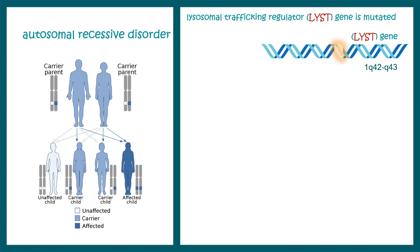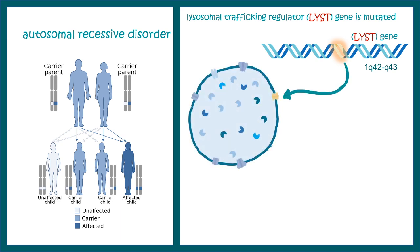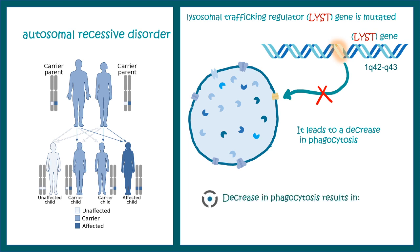This lysosomal trafficking gene is situated in the 1q42-q43 region and gives rise to a specific regulator protein that helps take specific substances inside the lysosome. When this gene is mutated, this product is not made and overall lysosomal trafficking is disrupted, leading to decreased phagocytosis, which can lead to albinism, peripheral neuropathy, and recurrent pyogenic infections.